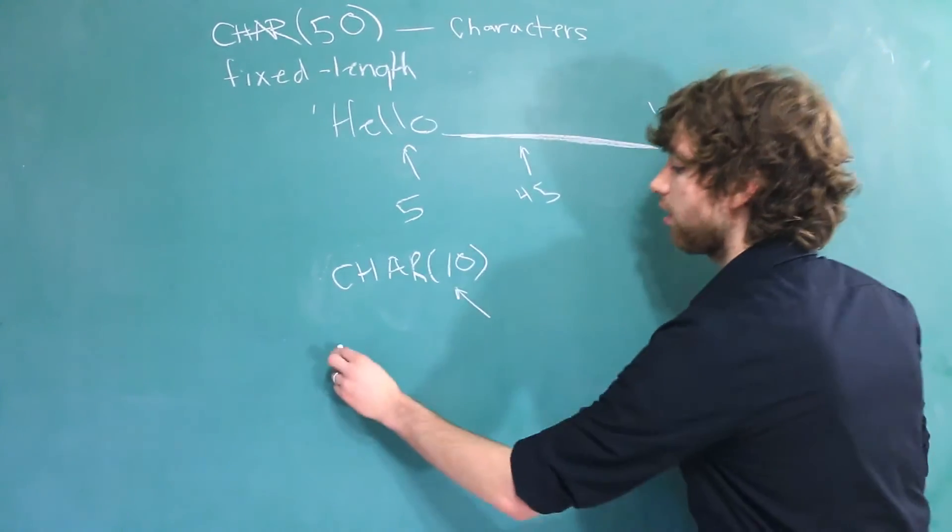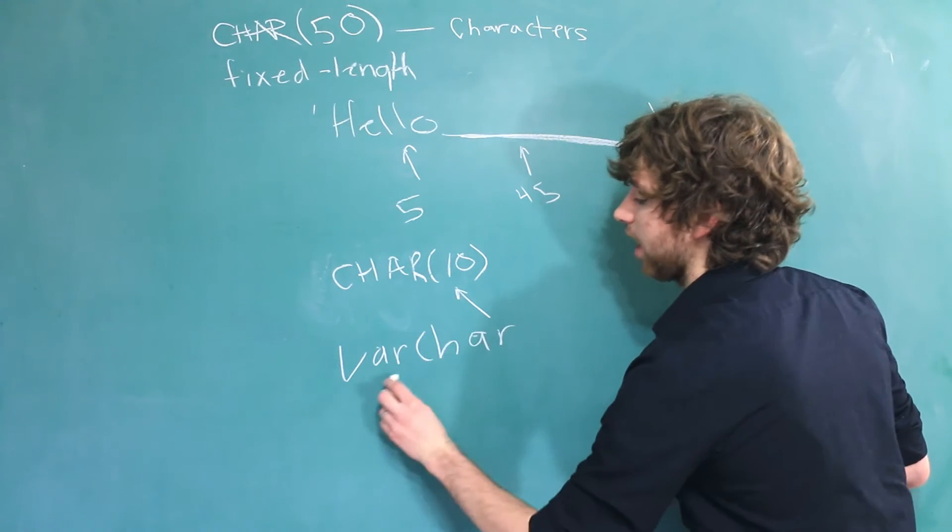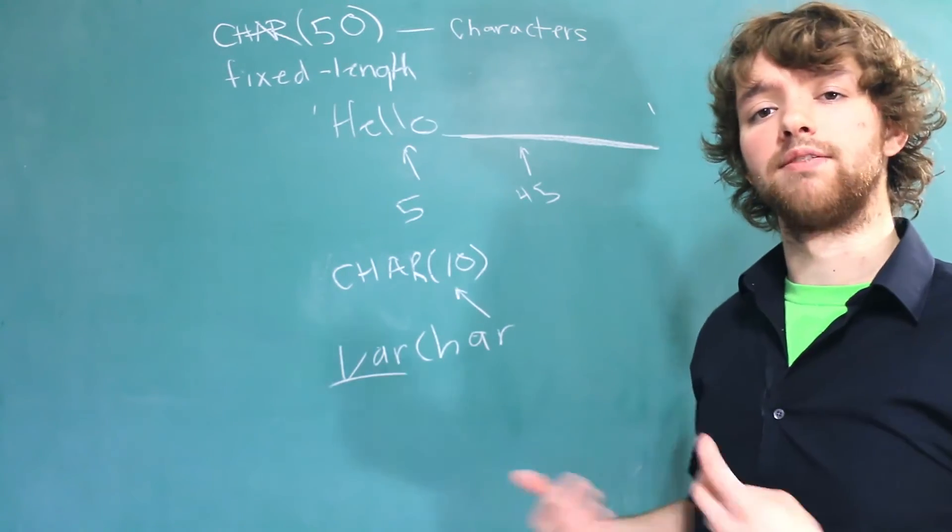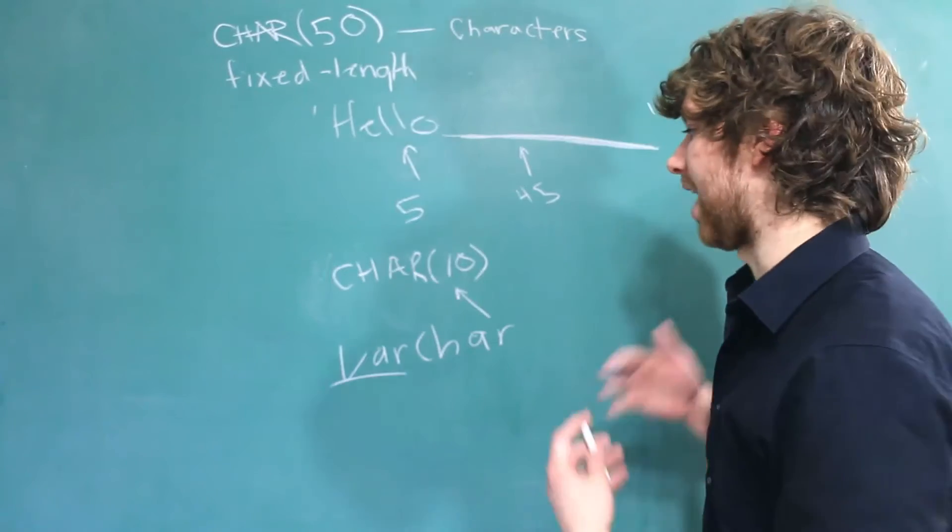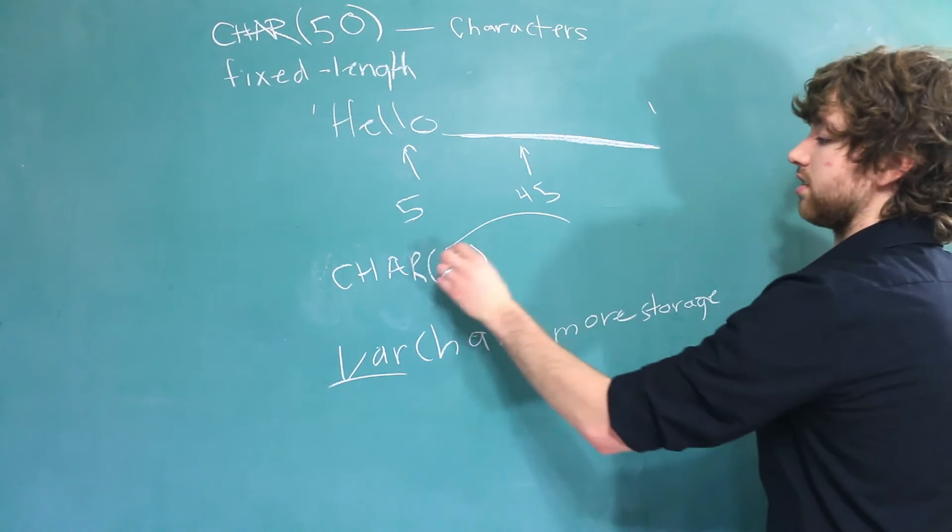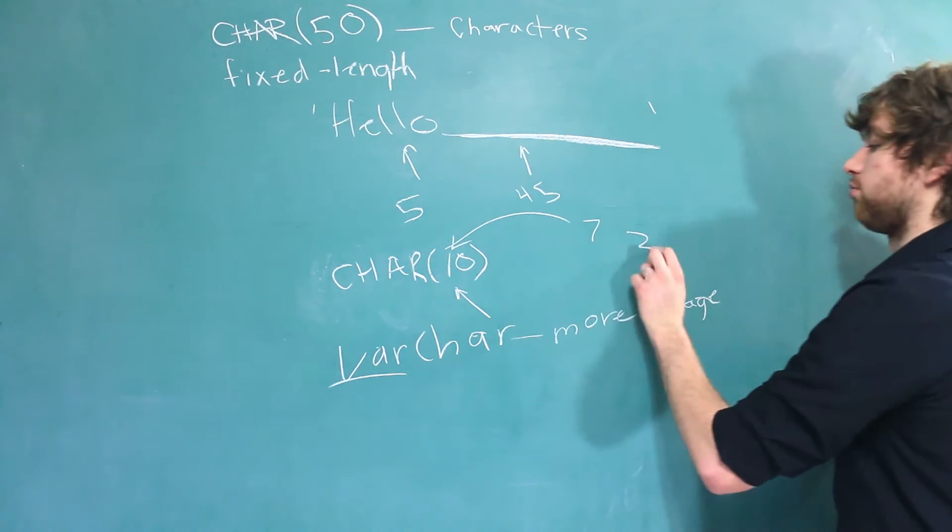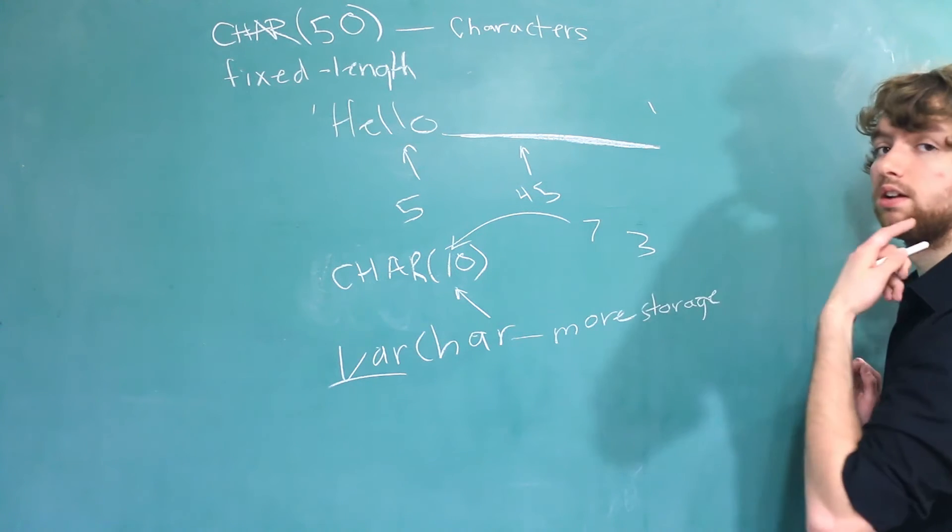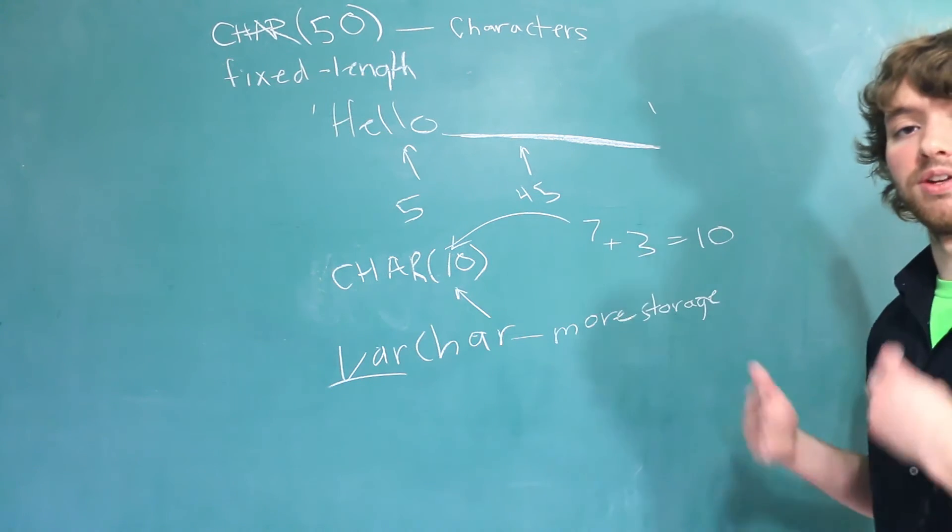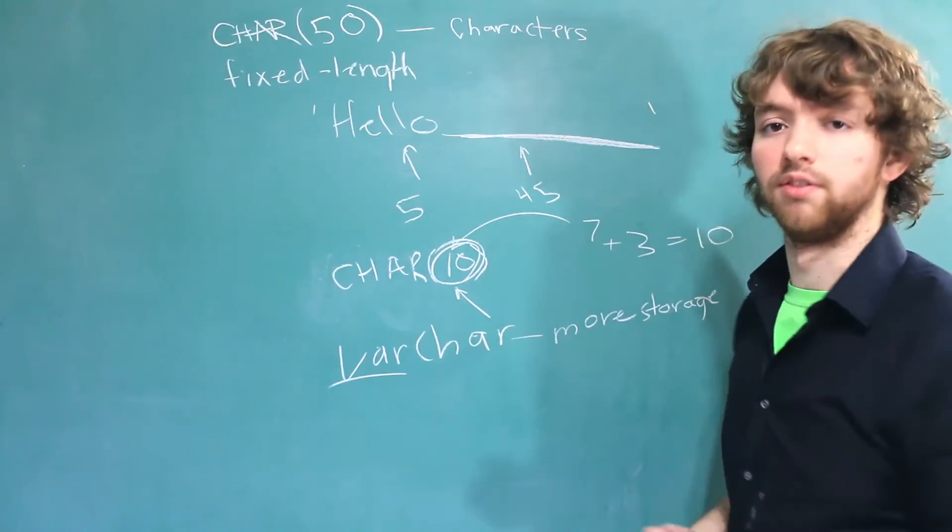When we are talking about varchar though, which is the data type we'll talk about in the next video, this is a variable length character string. And what that means is MySQL has to keep track of how long that string is. So it actually takes up more storage. But if for some reason you're not storing 10 characters here, let's say you're only storing 7, that means there's going to be 3 characters wasted. Because 7 plus 3 equals 10. That means char is only going to save you space if you are using the total number of characters.